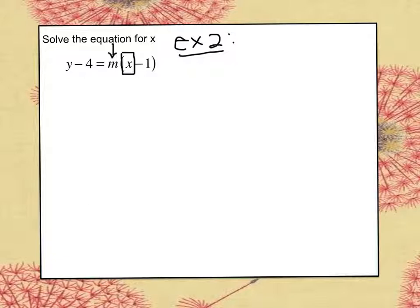Even with parentheses and two unknowns on one side, we are going to distribute. We get y minus 4 equals m multiplied by x minus m times 1, which is just m. Remember, we want to get the x alone, so I'm going to add the m over. Add m to both sides.